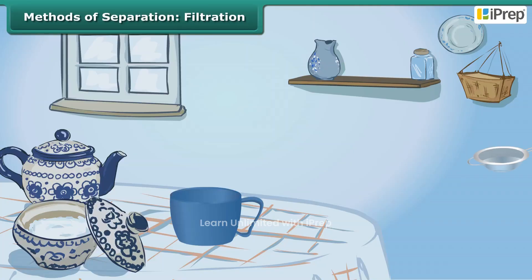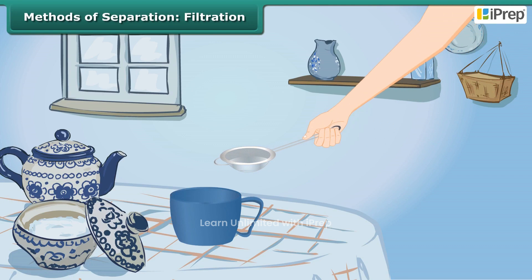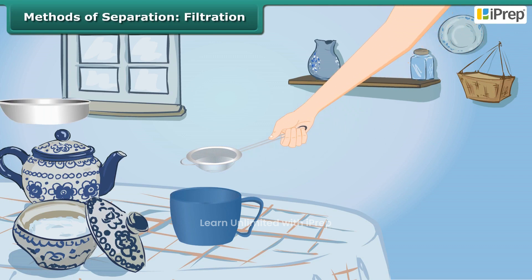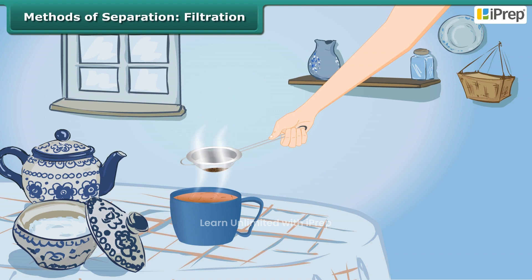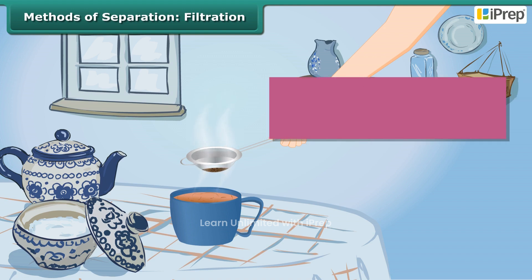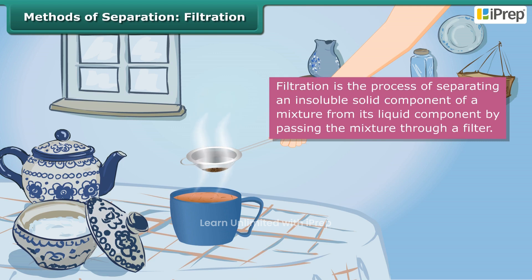After preparing tea, this tea stall owner pours the mixture into the tea strainer. The tea passes through the holes of the tea strainer, leaving behind the tea leaves in it. This process of separation is known as filtration.